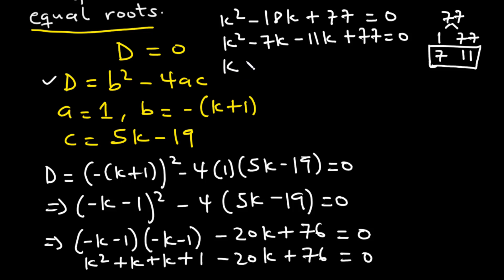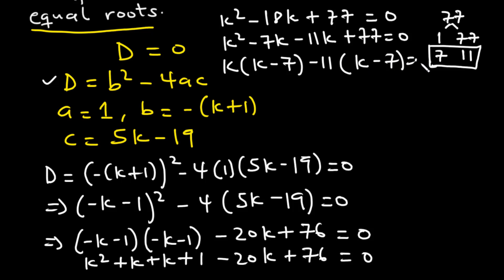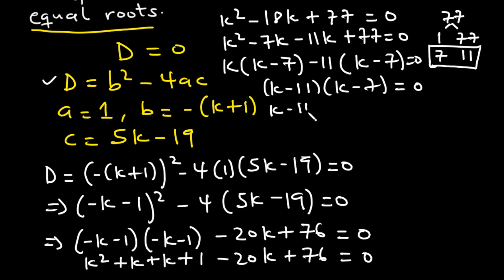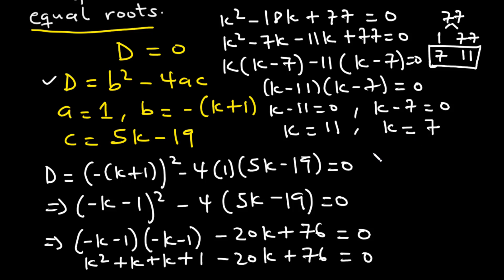Factorizing: k on the outside with bracket k minus 7, and minus 11 times bracket k minus 7 equals 0. So k minus 7 times k minus 11 equals 0, giving k equals 7 or k equals 11. These are the values of k for which the equation has equal roots.